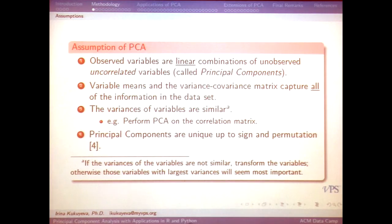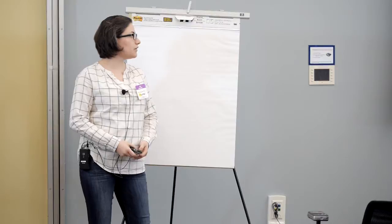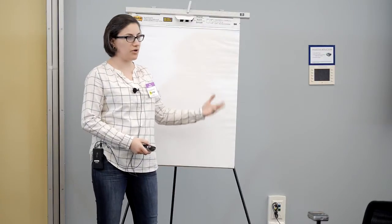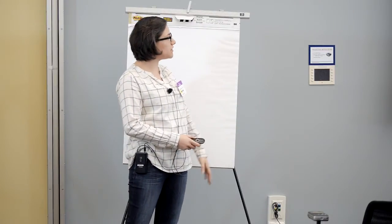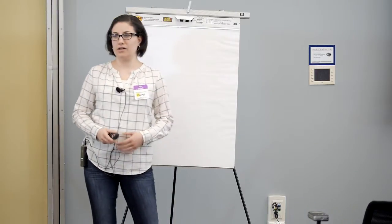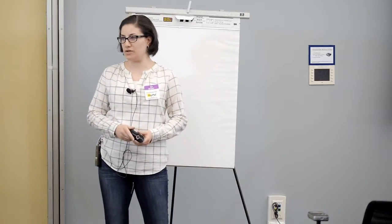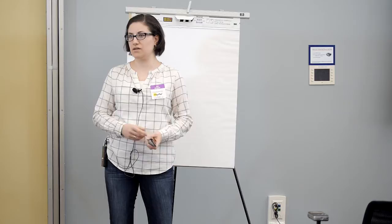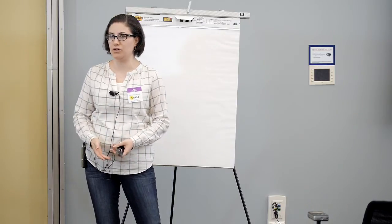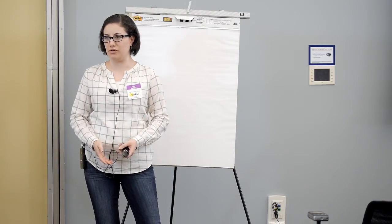All you need to know about your data is the means and variances, and we should be able to explain the information in there. Another key assumption is that the goal of principal components is to explain the variance in our data set. We need to make sure the variances of our variables are very similar, because if not, the variables with the highest variance are going to dominate the results and seem important even though they're actually not.